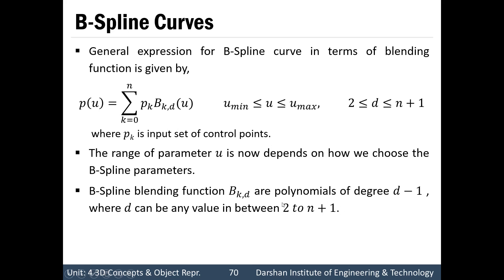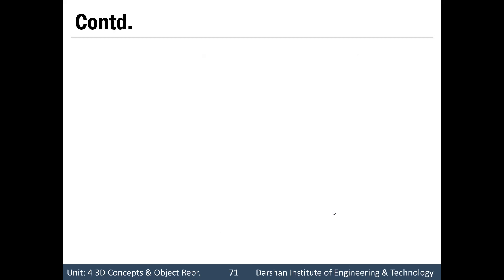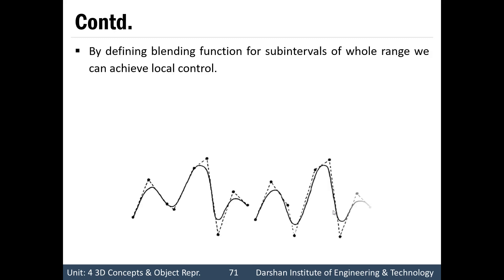We can choose a degree of B-spline blending function between 2 to n plus 1. We can set d equal to 1 also, but then the curve is only a point plot and of no use, because it will not give a curve shape — it will give simply a point shape. By defining a blending function for sub-intervals of the whole range, we can achieve local control.